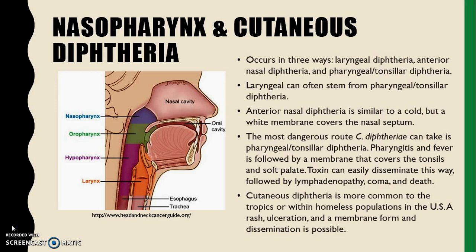Pharyngeal and tonsillar diphtheria is the most dangerous and most common form, as the toxin can easily disseminate. Pharyngitis, malaise, sore throat, fever, and hypoxia are the first symptoms. A membrane soon covers the tonsils and soft palate within the next few days, sometimes resulting in respiratory obstruction.